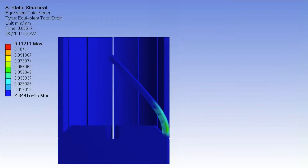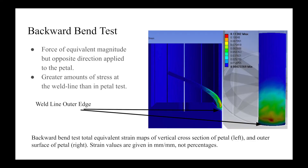The second test I conducted was the backward bend test, which I had also shown in the previous animation but without any plastic deformation. In this test, the petal is bent backwards into the center of the tube, with the same magnitude of force as in the petal test. Because the weld is at a tapered edge, this affects the overall amount of deformation and the concentrations of stress in the tube. I am again showing two total strain maps: one at the outer surface and another of the vertical cross-section. Unlike the petal bend test, stress is distributed more evenly through the inside of the petal and is not concentrated at the surface. I also observed greater concentrations of stress in the notch at the weld line in the backward bend test than in the normal bend test.